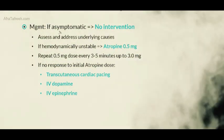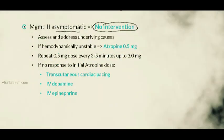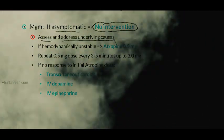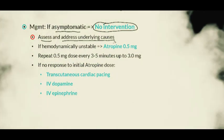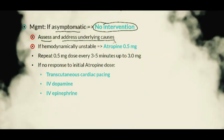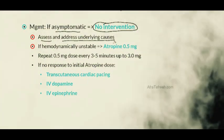In terms of management, if the patient with sinus bradycardia is asymptomatic, no intervention is required. Many patients walk around with slow heart rates and are completely stable. We should, however, always try to assess and address underlying causes, such as medications contributing to bradycardia. Once the patient becomes hemodynamically unstable, we proceed with the ACLS algorithm, which we will review in detail at the conclusion of this series.